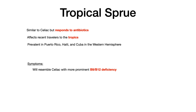Tropical sprue is probably the least high-yield disease on this list. It's essentially celiac, but it responds to antibiotics. It affects recent travelers to the tropics — very prevalent in people who visit Puerto Rico, Haiti, Cuba, and relatively common in India. Symptoms resemble celiac, and more prominently on your exam, the patient will present with a B9 or B12 deficiency. On your exam it's going to look like celiac, and then they'll either rule out celiac or say the patient was vacationing in Haiti — and that's your cue. Pretty low yield.